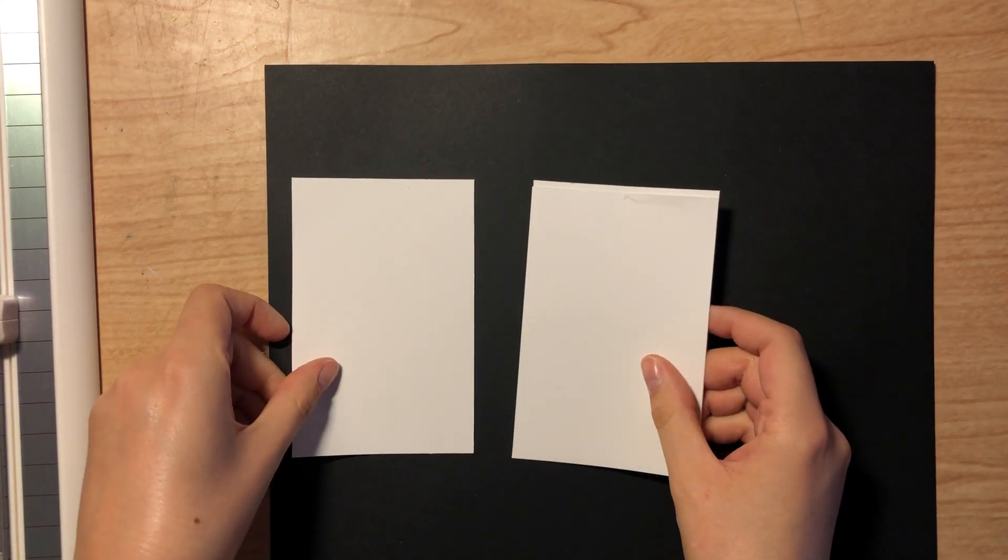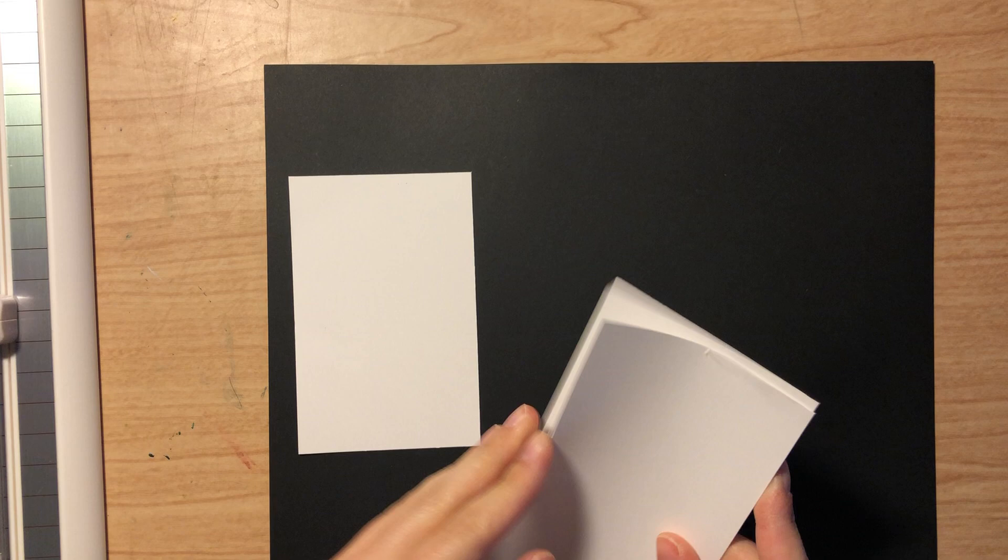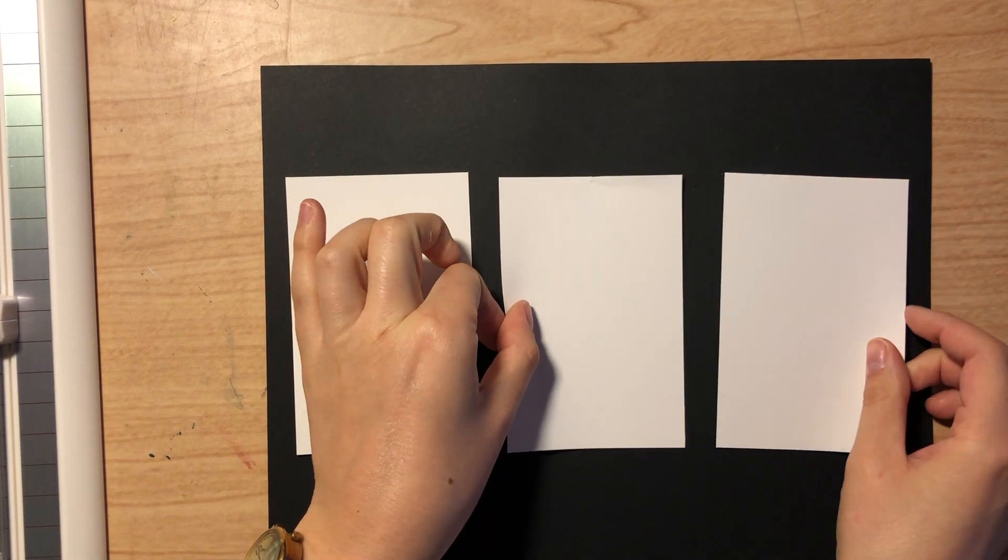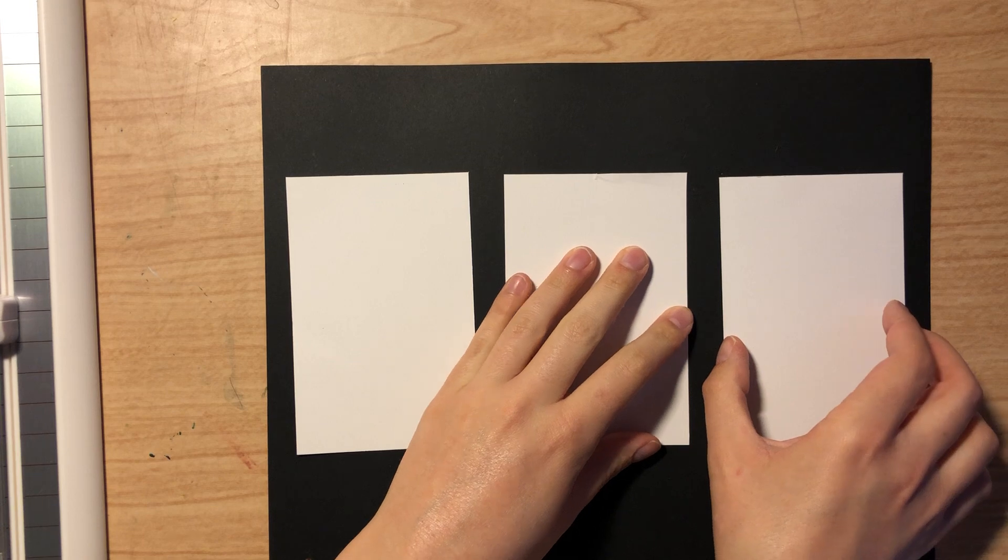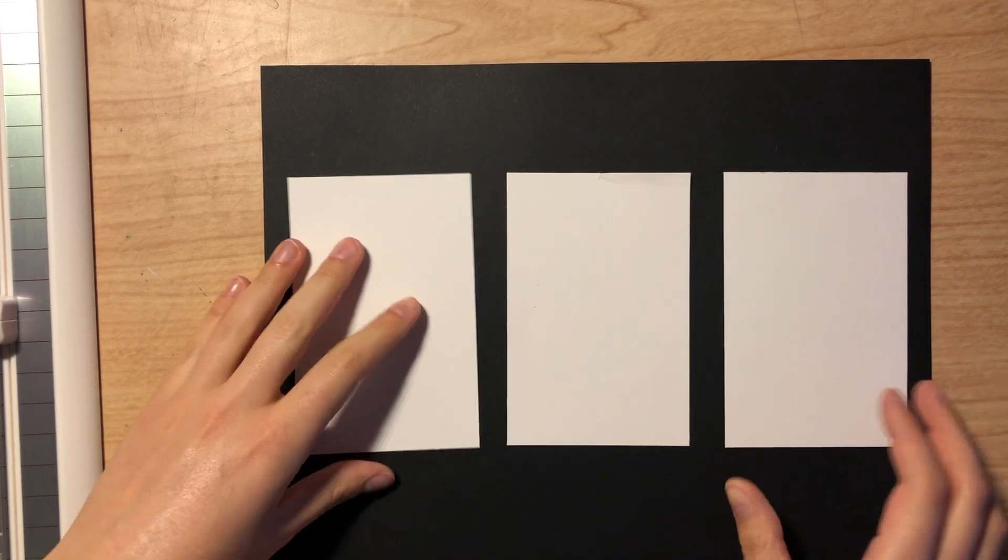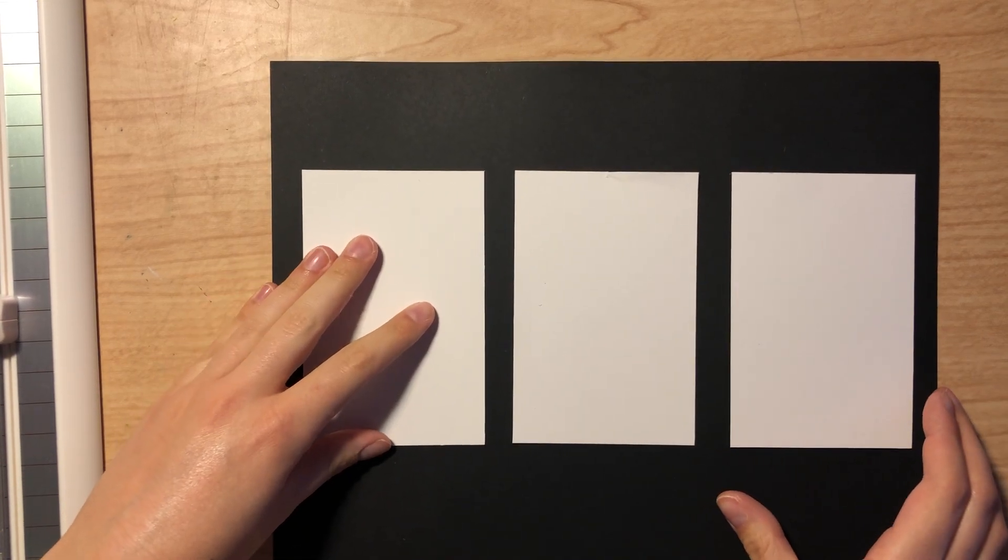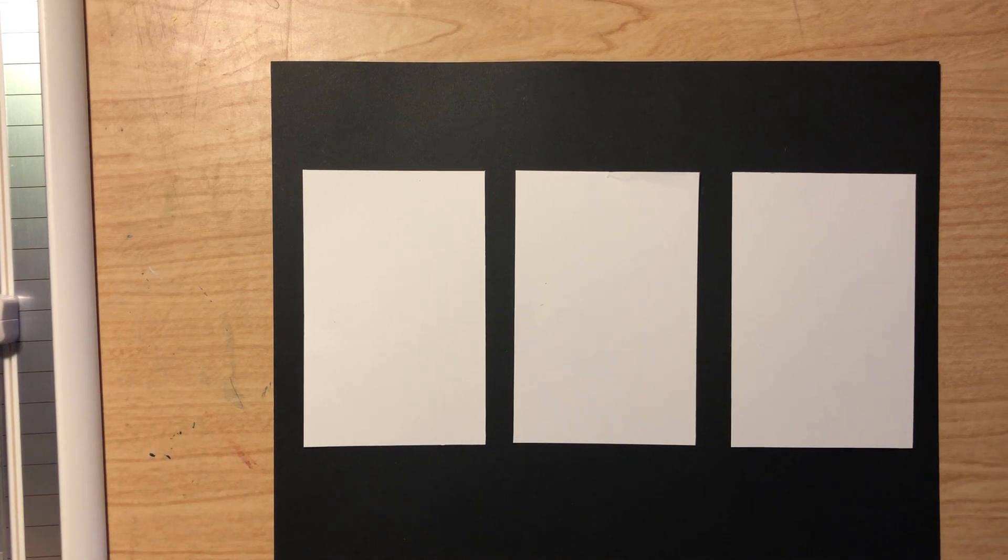So you'll take your black sheet of construction paper and then your three works of art. If you have your artwork vertical, so up and down, you're going to put them right side by side next to each other like this.